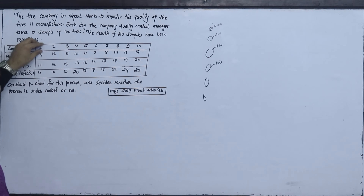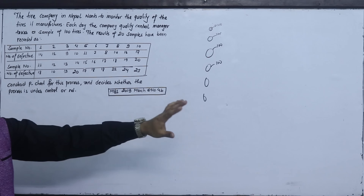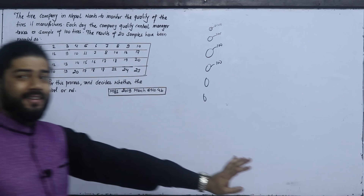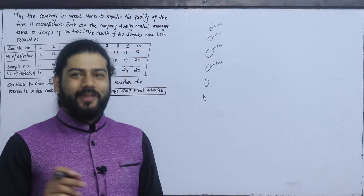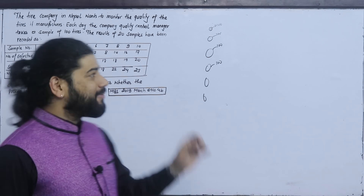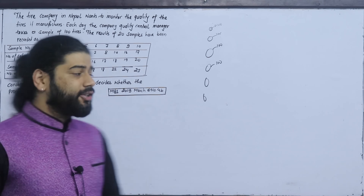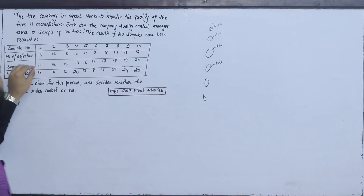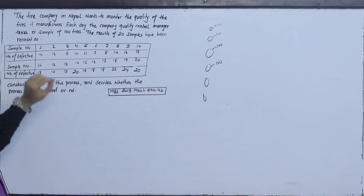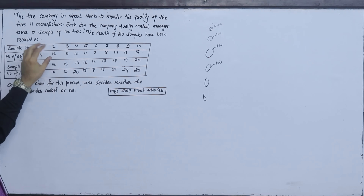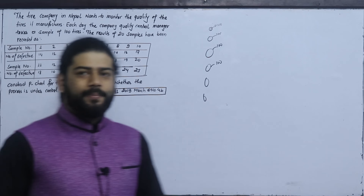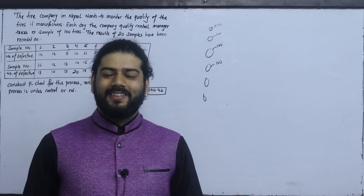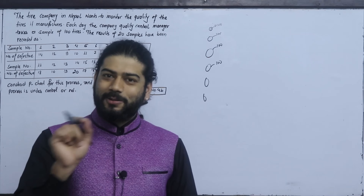For the first sample, how many tires are defective? The sample size is 100. The number of defects in the first sample is 14. In the second sample, the number of defects is recorded as well. Each sample has 100 tires.